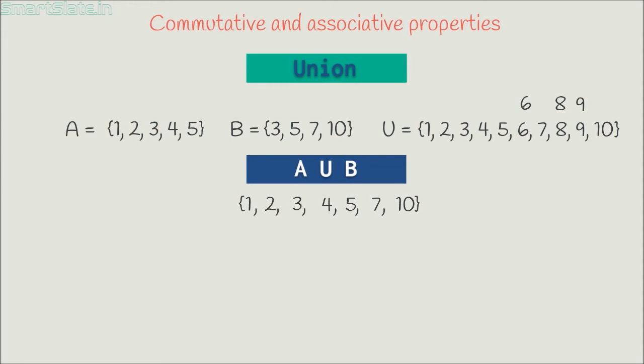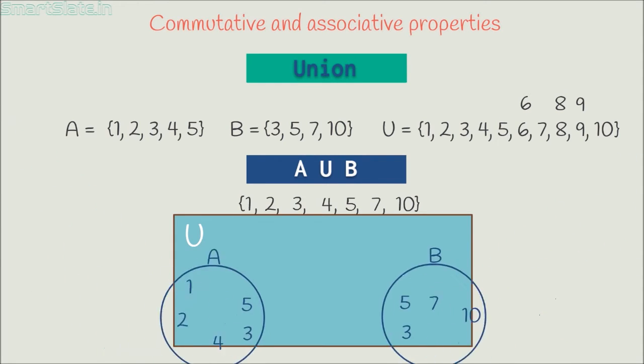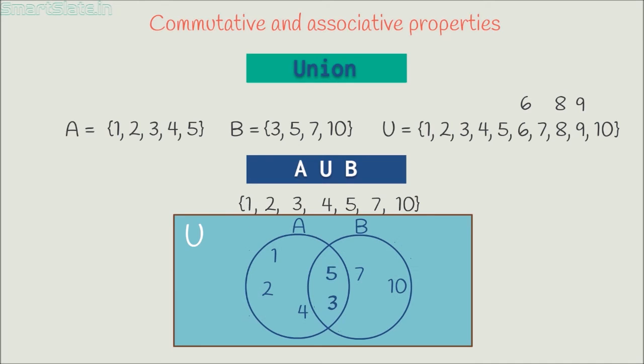Note 6, 8 and 9 are there in universal set but not in union of A and B, because these numbers are not there in either of sets. This is the graphical representation of A union B.